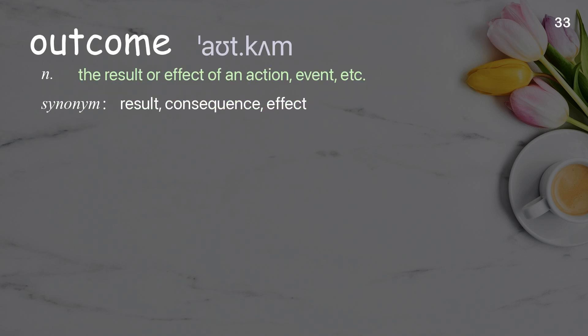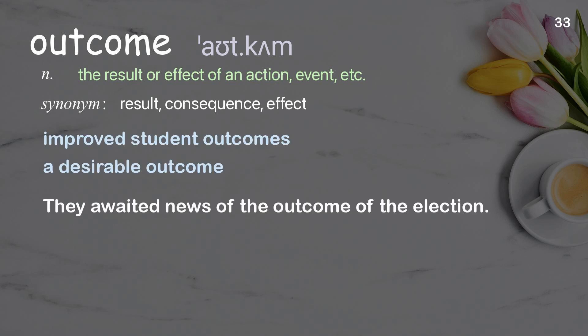Outcome: The result or effect of an action, event, etc. Examples: Improved student outcomes. A desirable outcome. They awaited news of the outcome of the election.